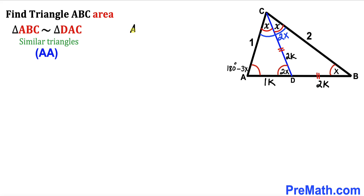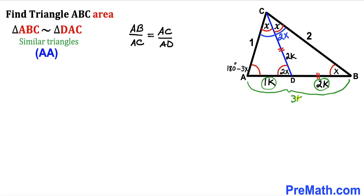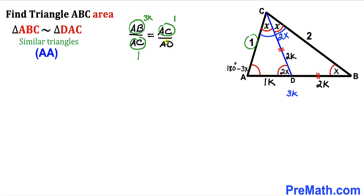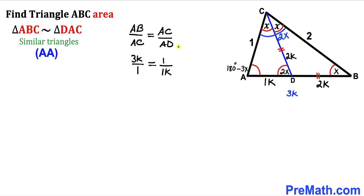From this similarity we have a proportion: the ratio of AB to AC equals the ratio of AC to AD. So I can write AB over AC equals AC over AD. We know AB equals 1k plus 2k equals 3k, AC equals 1, and AD equals 1k.